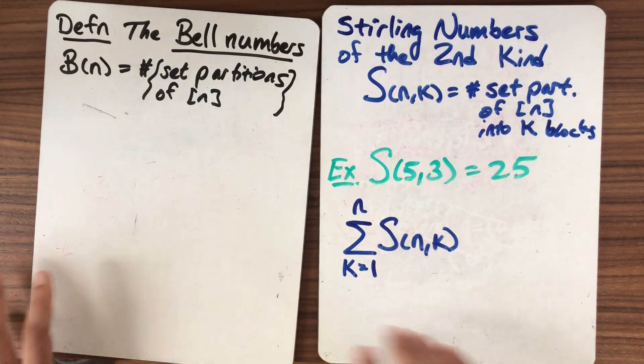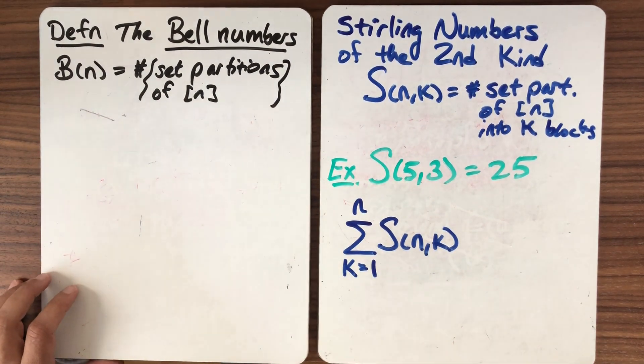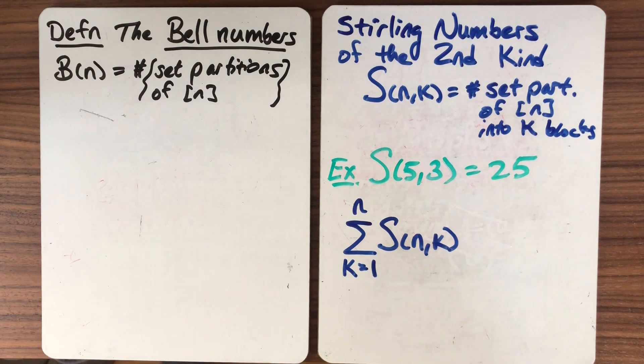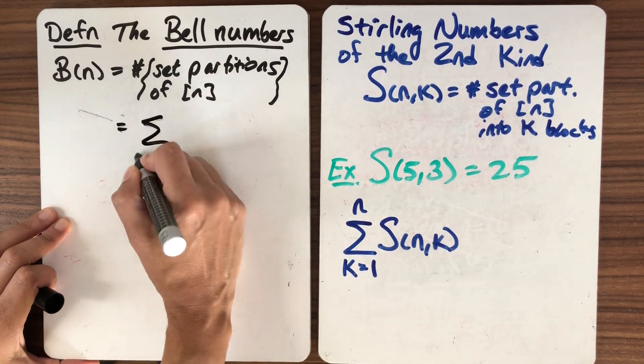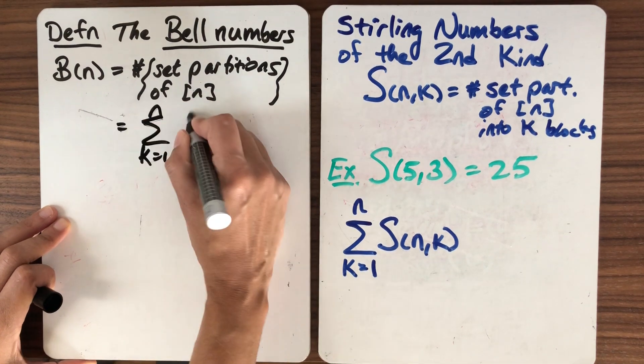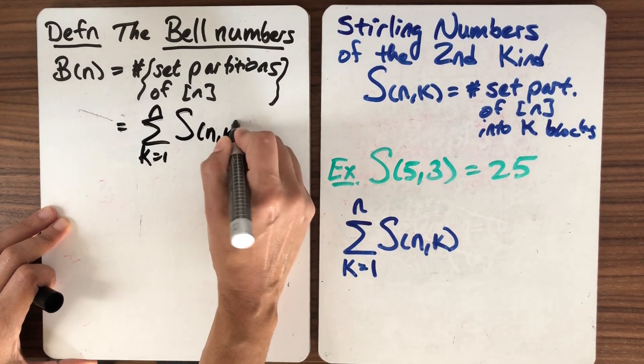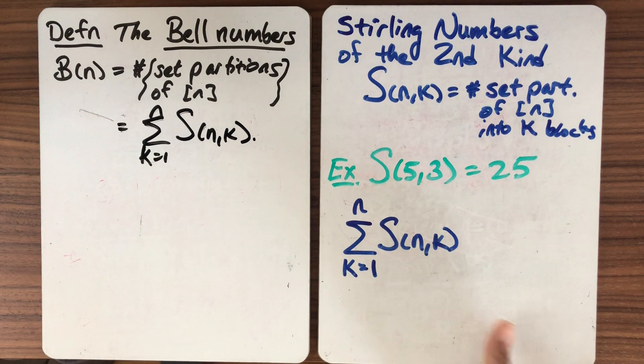So we're going to call this the Bell numbers. The Bell numbers, denoted B(n), count exactly this, the number of set partitions of n into any number of blocks. So let me just transfer this over. K equals 1 to n of S(n,k). And we can try to compute the Bell numbers.